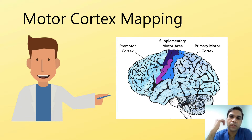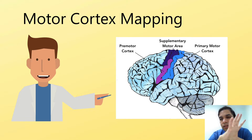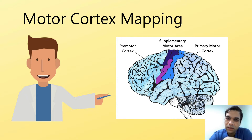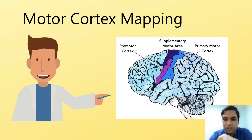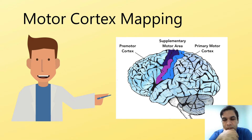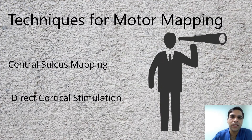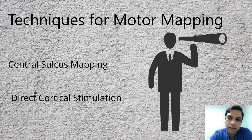So what is motor cortex mapping? Motor cortex mapping is just like a world map where you map different countries — in the same way, on the surface of the brain you have to map the motor area. Because to the human eye everything looks similar, you need to identify it by technology. I will be showing you the different types of mappings we use to identify the motor area.